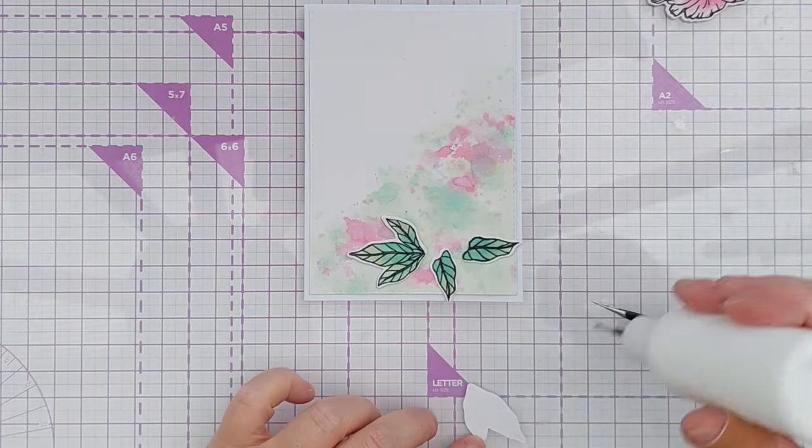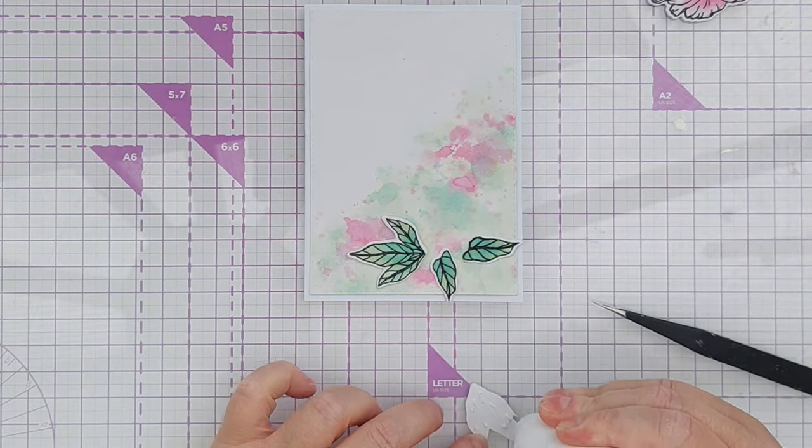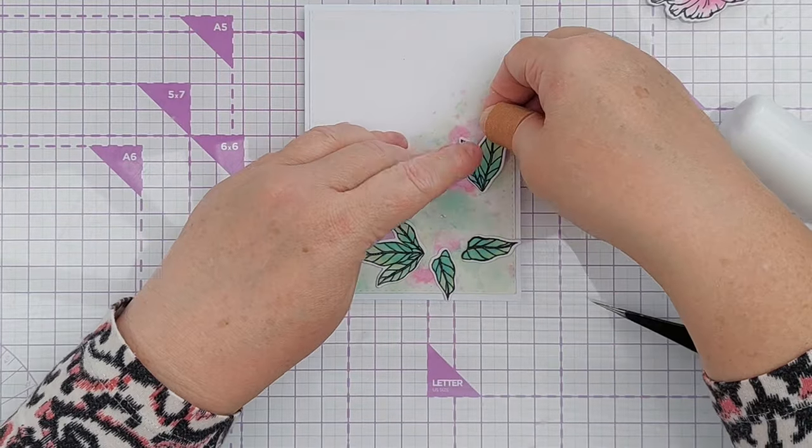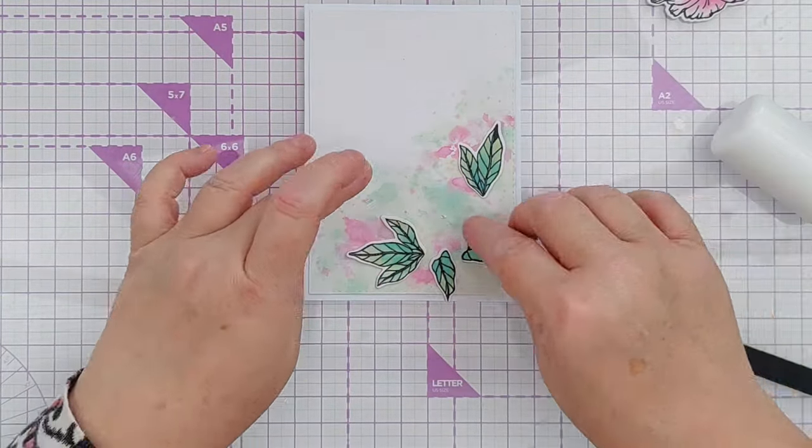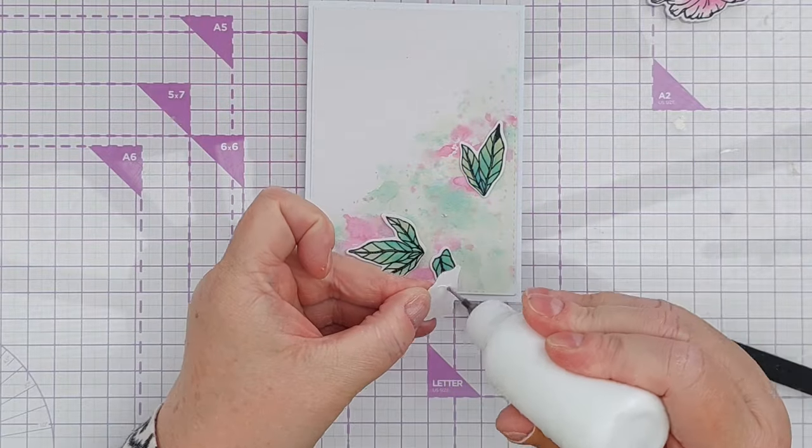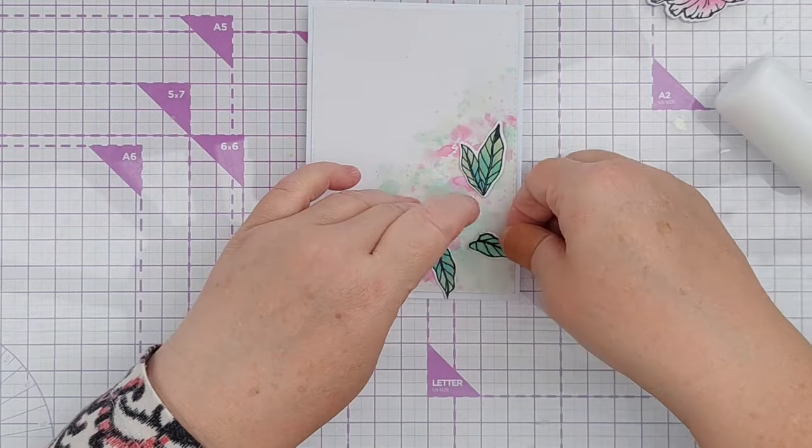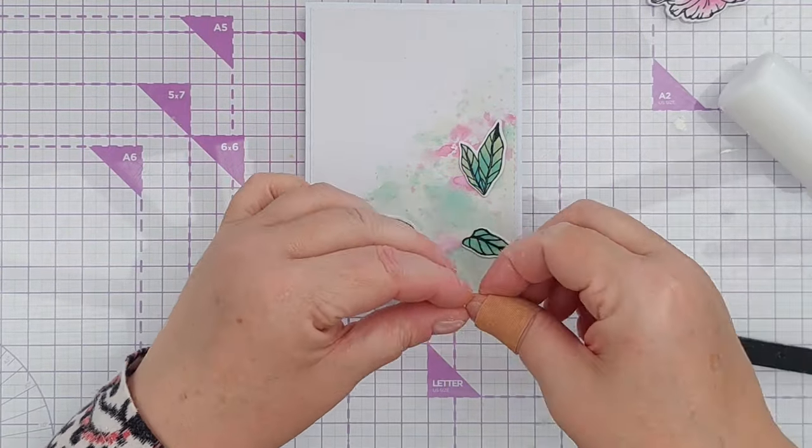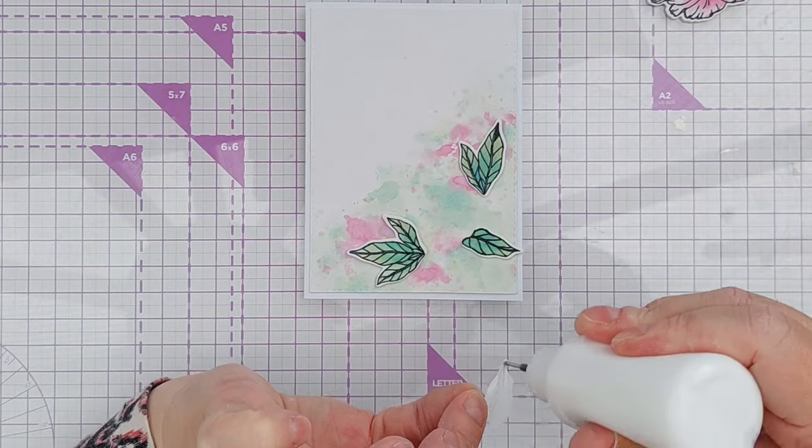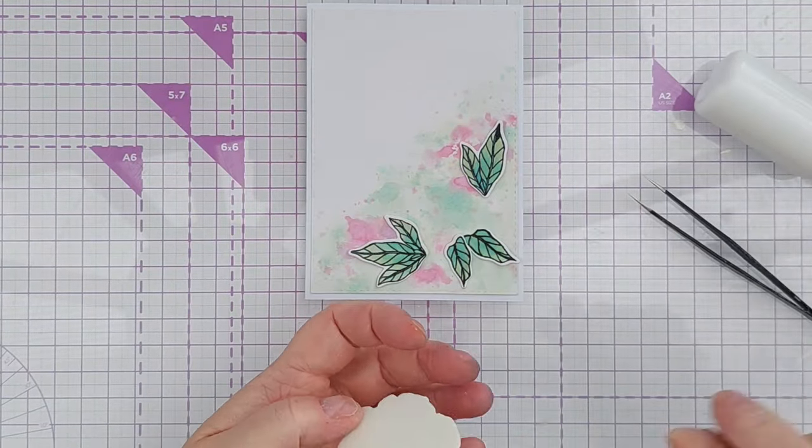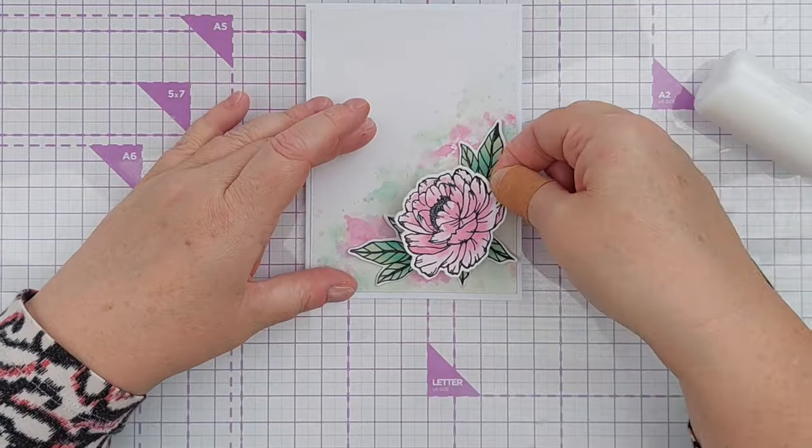So I stuck my leaves down where I wanted them, and then I added my flower on top. I did pop a little bit of very thin craft foam behind my flower so it's lifted up a bit—it's got a bit of dimension. And then I added a few drops of glue under the tips of the leaves to hold them down.